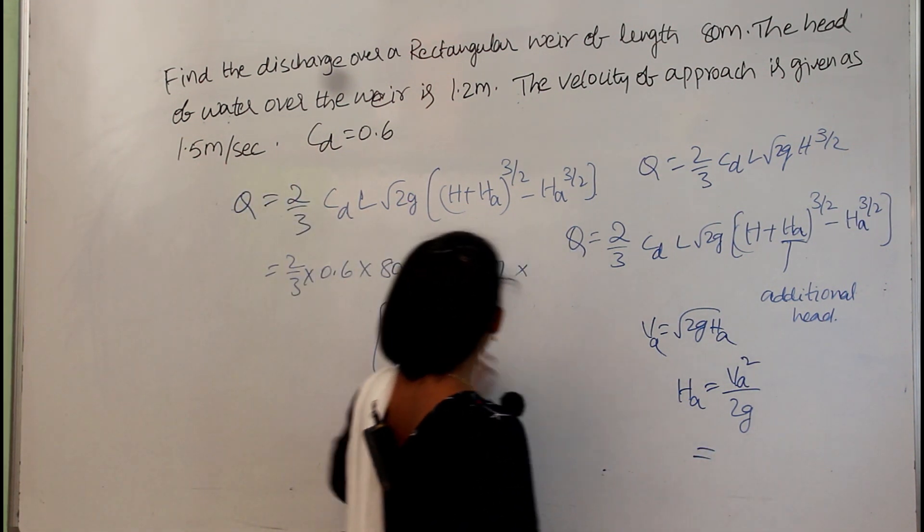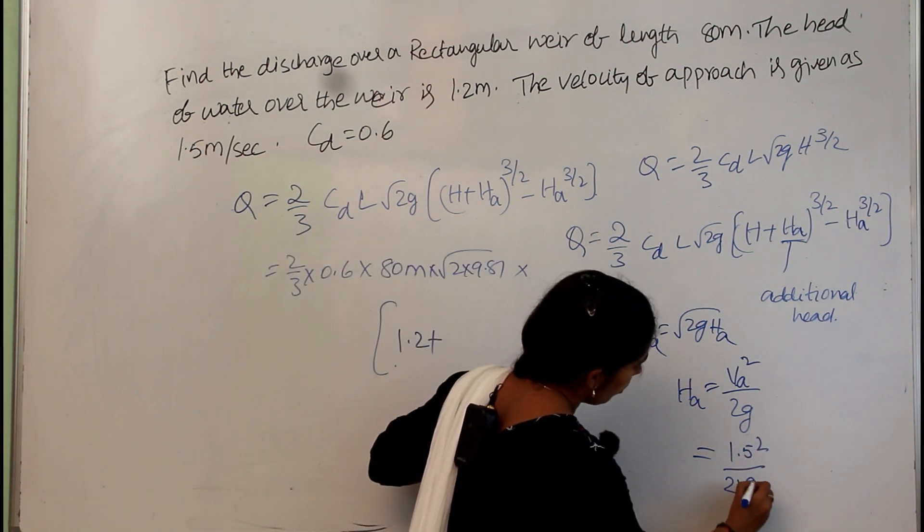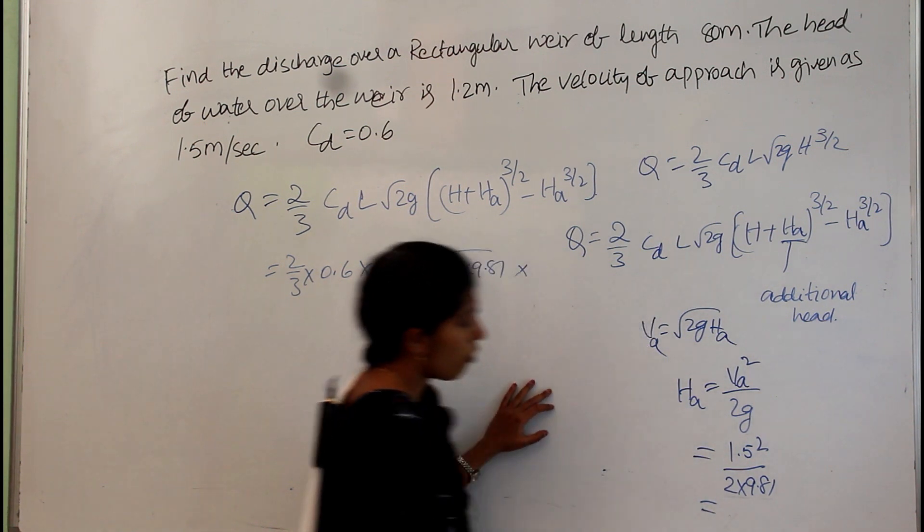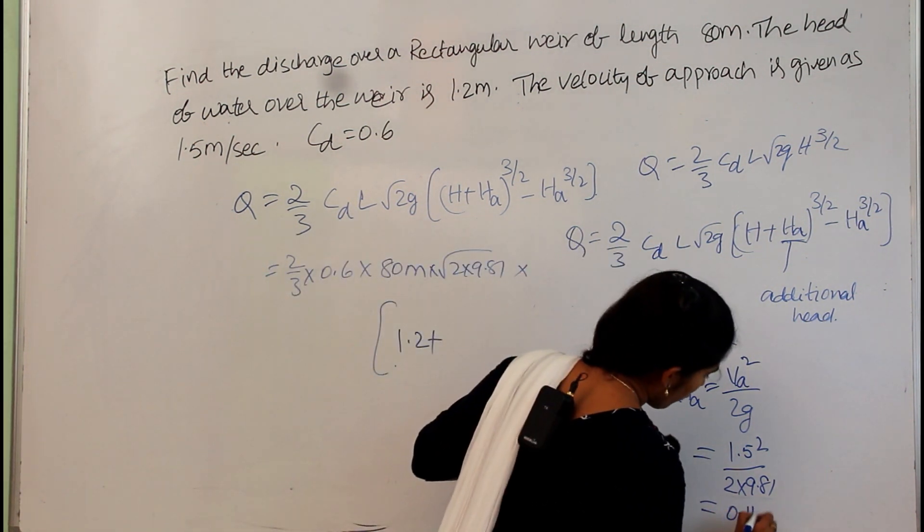So ha is equal to va square, which is 1.5 square by 2 into 9.81. Whatever value came, that is 0.1146 meters.